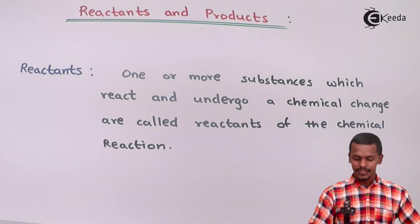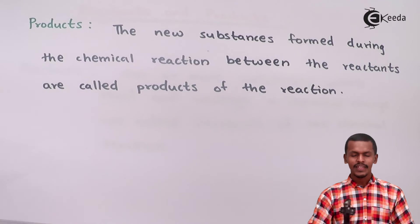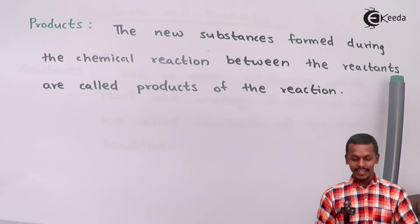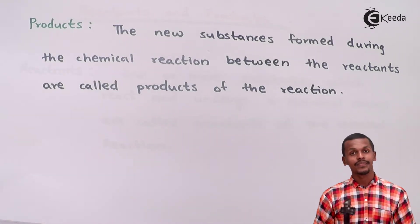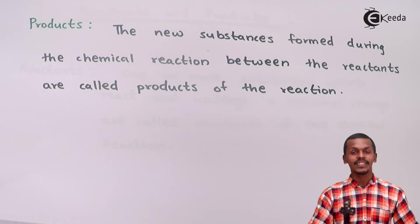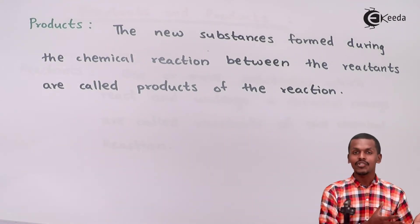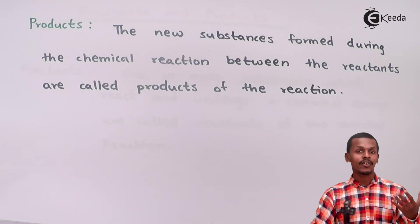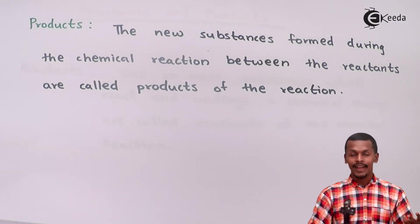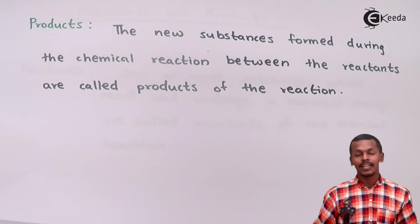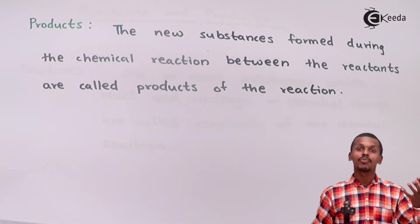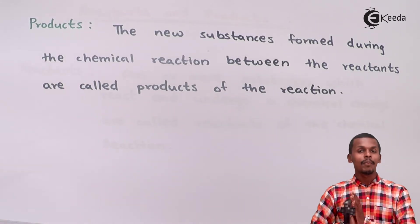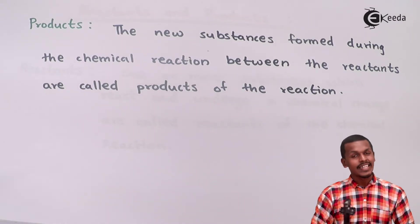Now, what are products? The new substances formed during the chemical reaction between the reactants are called products of the reaction. The new substance is formed because of the interaction of the reactant molecules. It is not necessary that there be only two reactant molecules — there could be three or multiple reactive molecules that interact to form a particular product.